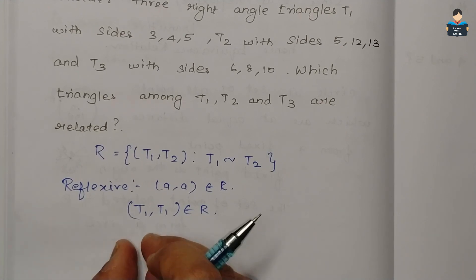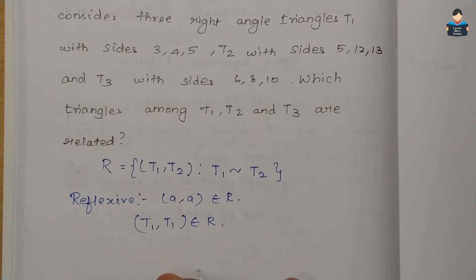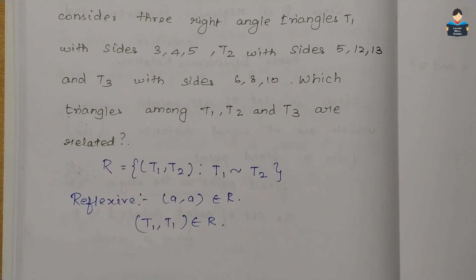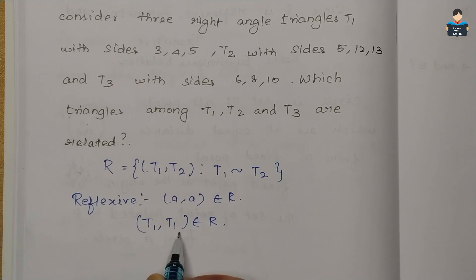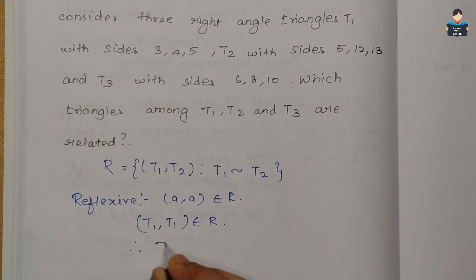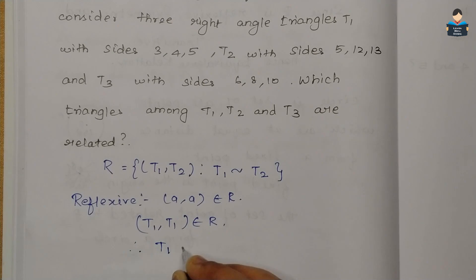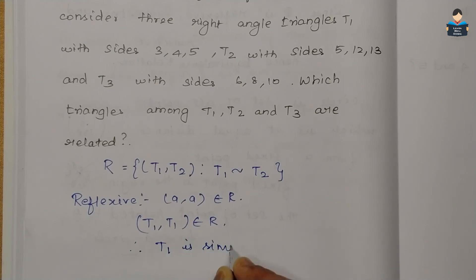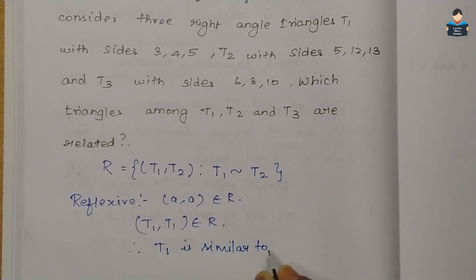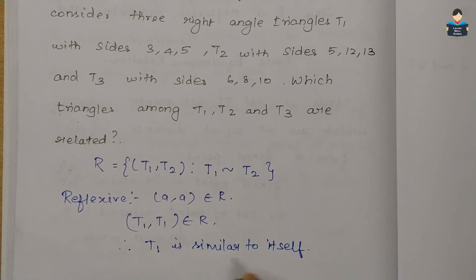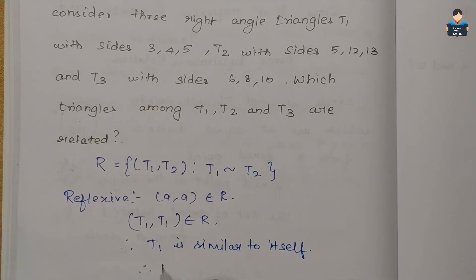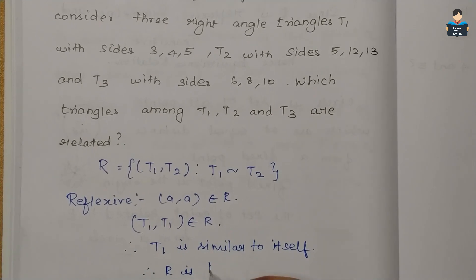Every triangle is always similar to itself. So T1 is similar to T1 — that is, T1 is similar to itself. Therefore, R is reflexive.